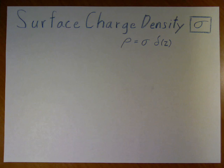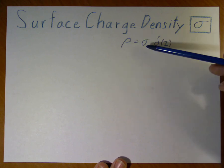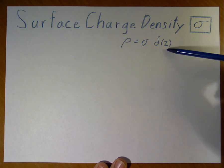In this video, we are going to look at how to determine the electric field from a surface charge density using Gauss's law. First, we will define the charge density, volume charge density, as a surface charge density times a delta function.